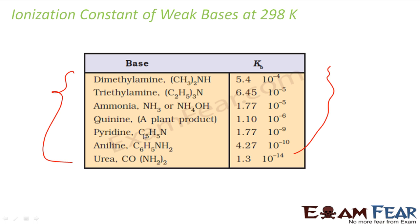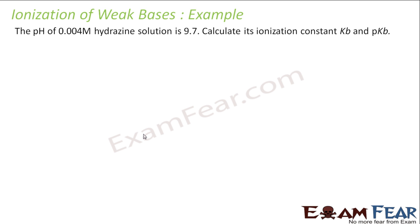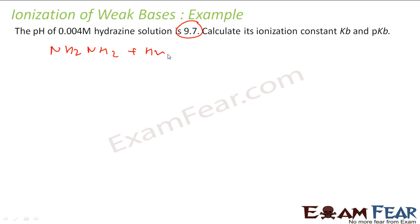Let's take some examples of ionization of weak base. The pH of a 0.004 M ammonia solution is 9.7; we have to find the ionization constant KB and pKB. The reaction is: NH₃ + H₂O → NH₄⁺ + OH⁻.